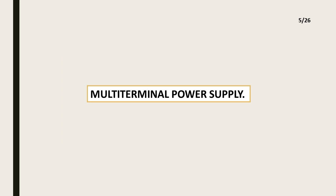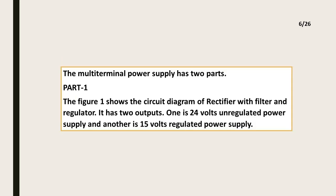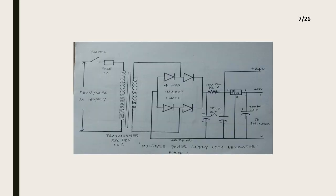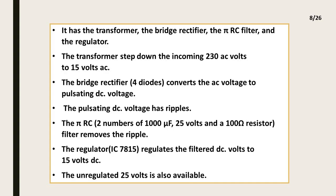Multi-terminal power supply. The multi-terminal power supply has two parts. Part 1: The figure 1 shows the circuit diagram of a rectifier with filter and regulator. It has two outputs. One is 24 volts unregulated power supply and another is 15 volts regulated power supply. It has the transformer, the bridge rectifier, the pi RC filter, and the regulator.